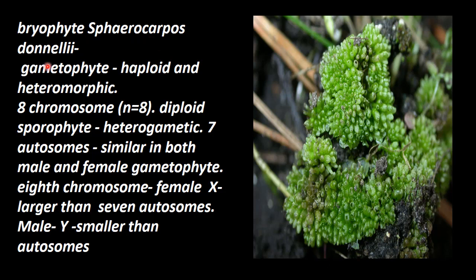In bryophyte Sphaerocarpus, there is a gametophytic stage and a sporophytic stage. This gametophytic stage is haploid in nature and heteromorphic — male plants will be very small, female plants will be big, and the morphological structure will be different.